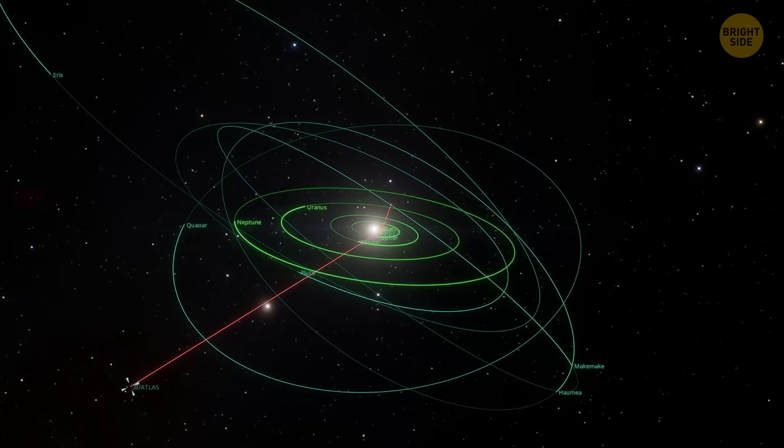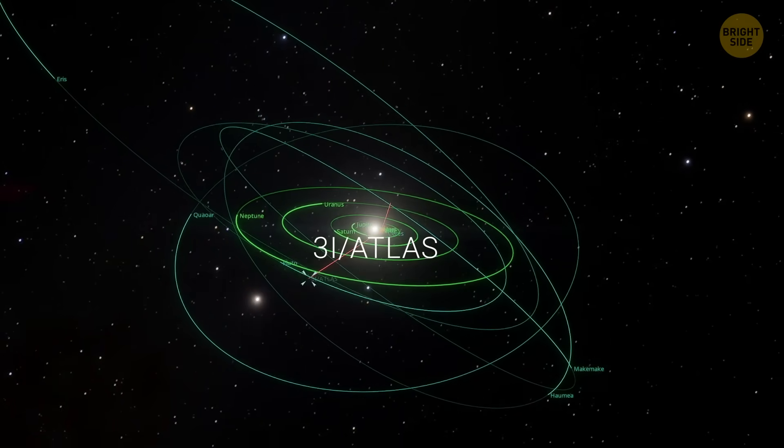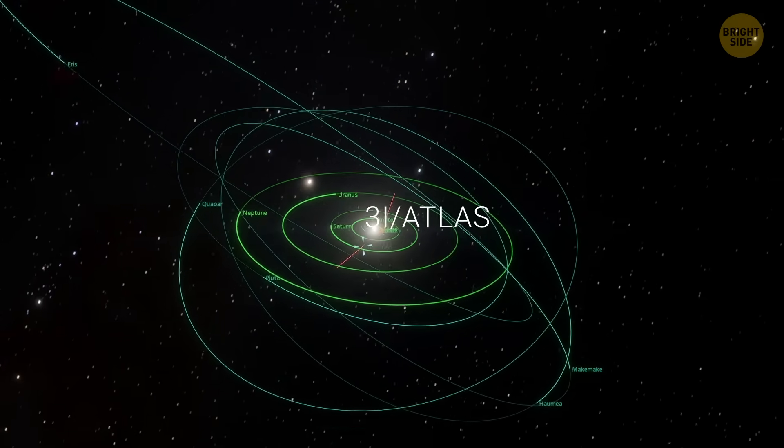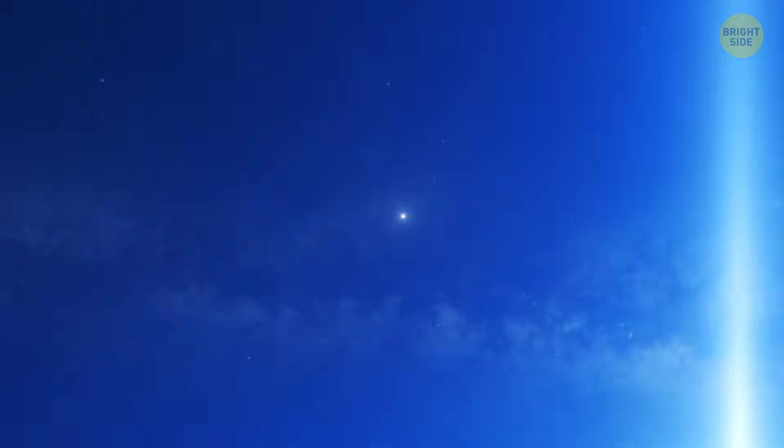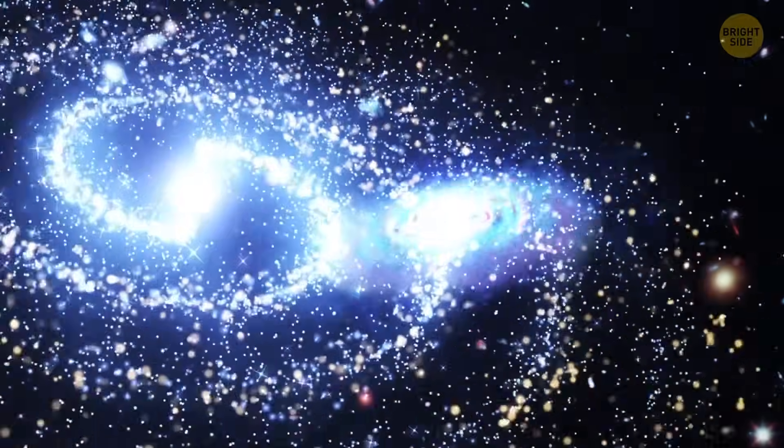This new object looks a lot like another strange wanderer called 3I Atlas. And you'll understand why we say strange pretty soon. So, could both of them come from the same place outside our solar system?